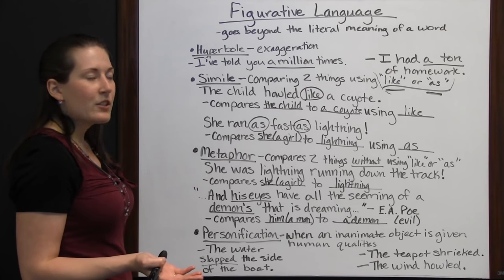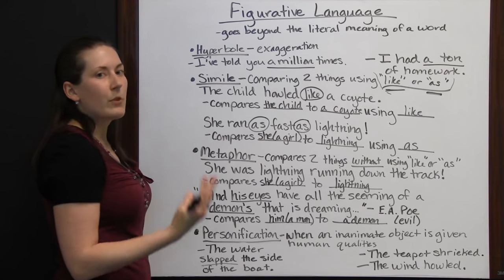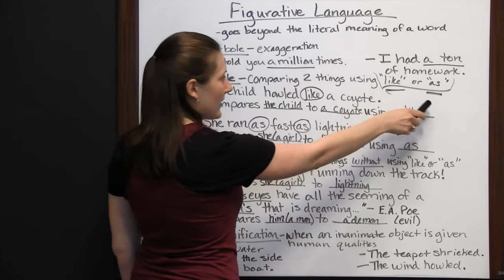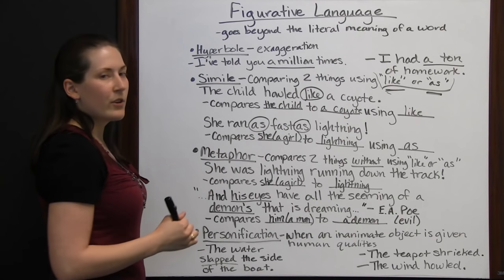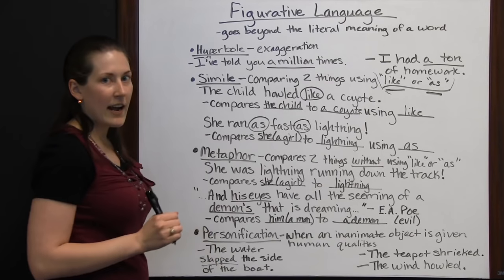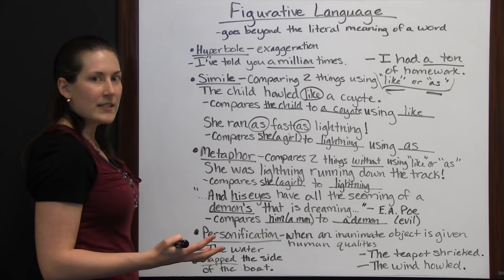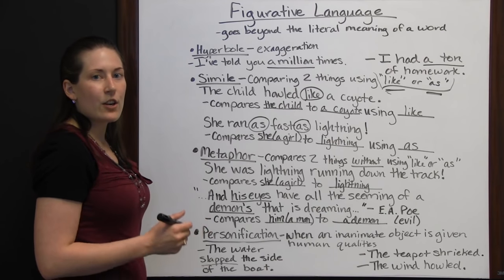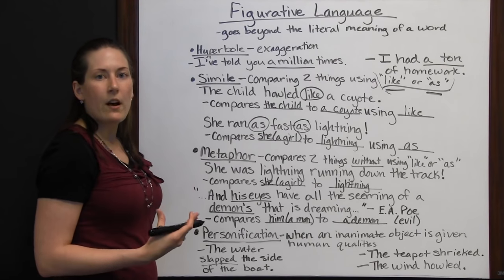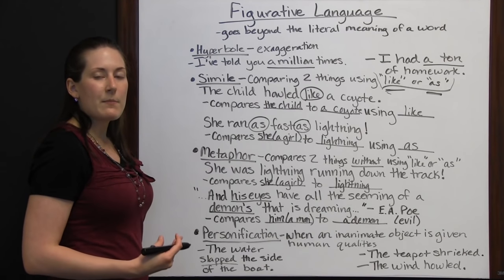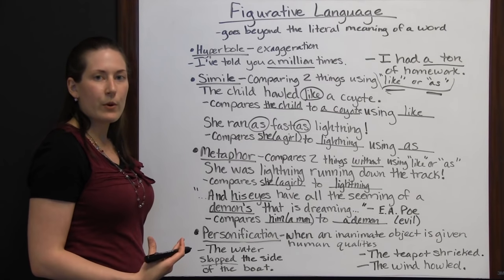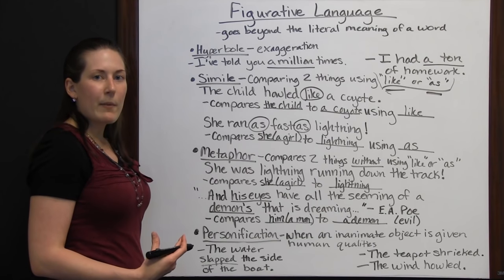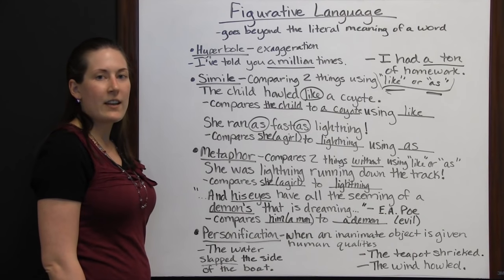So figurative language can be many different things: hyperbole, where you're exaggerating; simile, where you compare two things using 'like' or 'as'; metaphor, where you compare two things without using 'like' or 'as'; and personification, when an object is given human qualities. All of these techniques are used so that the words go beyond their literal meaning and give you a deeper understanding of the poem or work you're reading. The author is trying to make you really think about meaning and put certain connotations in your head.